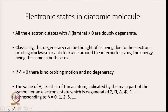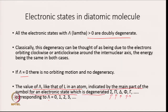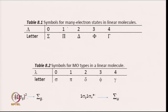All electronic states with λ > 0 are doubly degenerate. Classically, this degeneracy can be thought of as electrons orbiting clockwise or anticlockwise around the internuclear axis with the same energy. For λ = 0, there is no orbiting motion and no degeneracy. The value of λ, analogous to L in an atom, is indicated by the main letter symbol for an electronic state: λ = 0 corresponds to Σ, λ = 1 to Π, λ = 2 to Δ, λ = 3 to Φ, and λ = 4 to Γ.